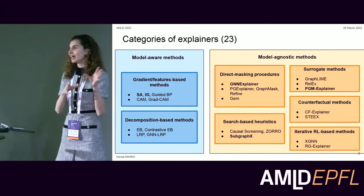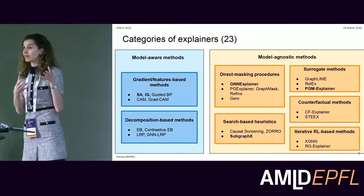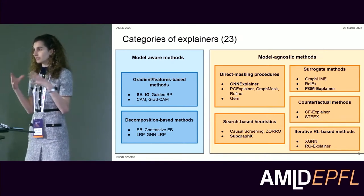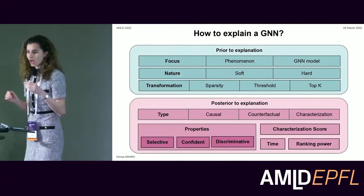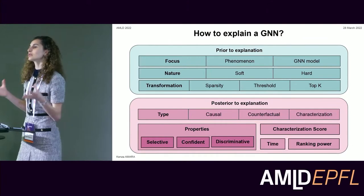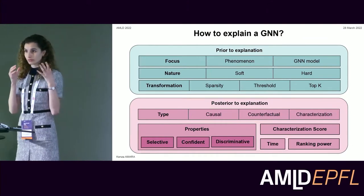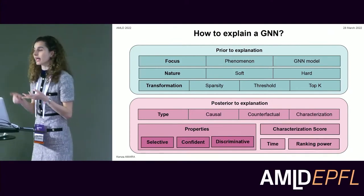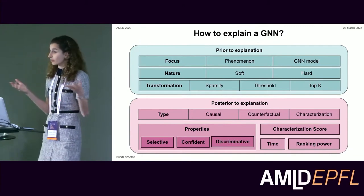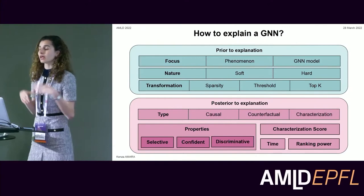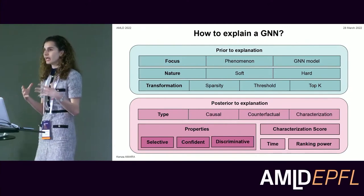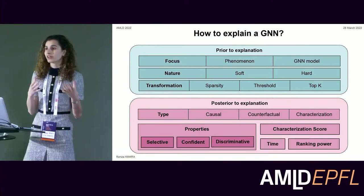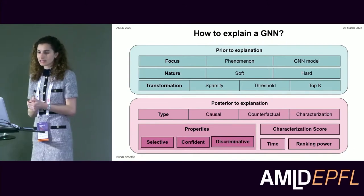There are actually many explainability methods available for graph neural networks, classified into different categories based on their procedure. Prior to generating an explanation, you have to make choices such as choosing the focus of your explanation, the nature of your explanation, and what type of transformation to apply. Afterward, you evaluate the explanation on criteria such as how selective, confident, or discriminative it is.